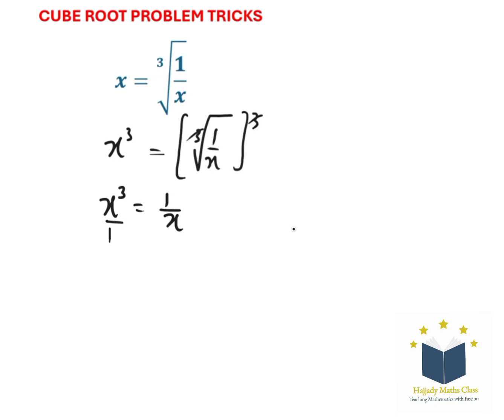So, cross multiplying, this is the same thing as x to the power of 4 equals to 1. So here is x to the power of 4 minus 1 equals 0.